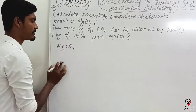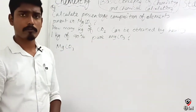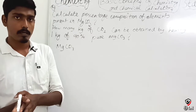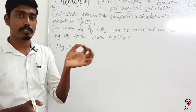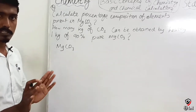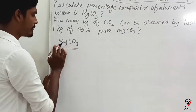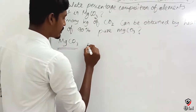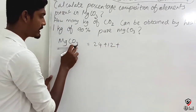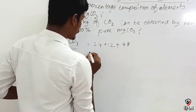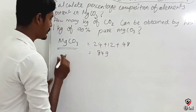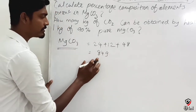First, let's calculate the molar mass. If you do the formula calculation: magnesium is 24 grams, carbon is 12 grams, and oxygen is 3 × 16 = 48. Wait — let me recalculate: 24 plus 12 equals 36, so the total is 84 grams. Magnesium carbonate is 84 grams per mole.